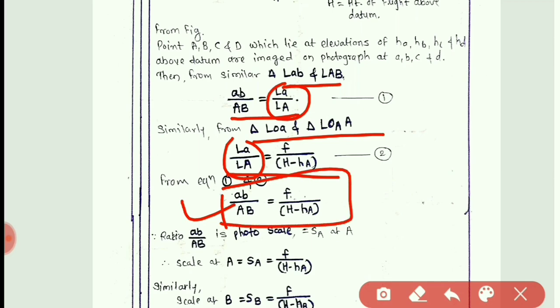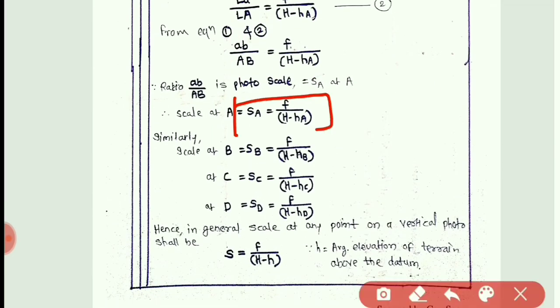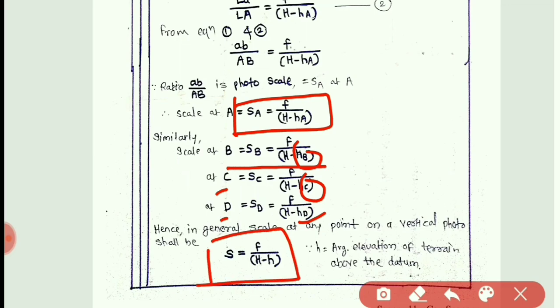Here H_A means the height of the ground point above datum. So the ratio ab upon AB is the photo scale at point A. The formula for scale S_A is equal to f upon (H minus H_A). Similarly, for S_B we put H_B, for S_C we put H_C, and for S_D we put H_D — the formula remains the same. In general, the scale of the vertical photograph is S = f / (H − h), where h is the average elevation of the terrain above the datum.